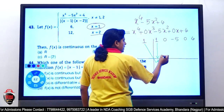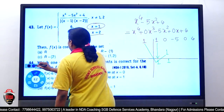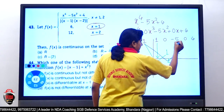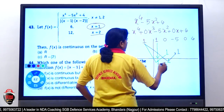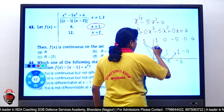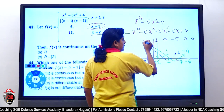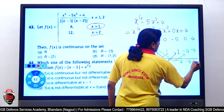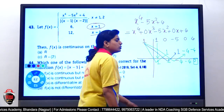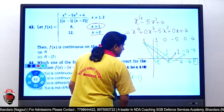Performing synthetic division with x = 1: bring down 1, then 1×1 = 1, so 0 + 1 = 1. Next, 1×1 = 1, minus 5 + 1 = −4. Then 1×(−4) = −4, 0 + (−4) = −4, and 1×(−4) + 4 = 0. Remainder is 0, confirming x − 1 is a factor.